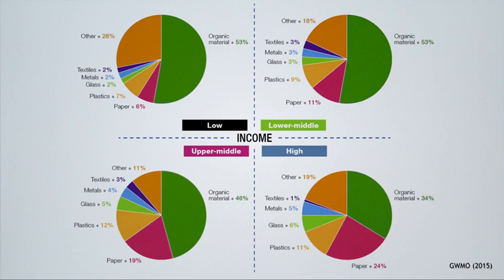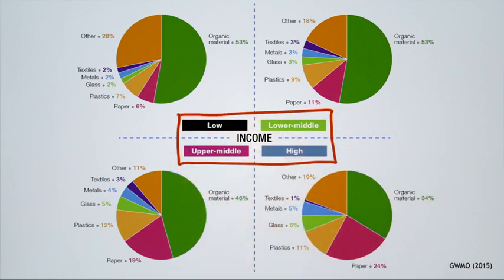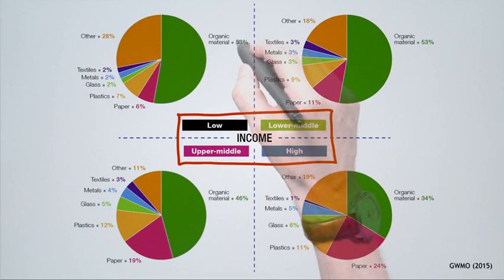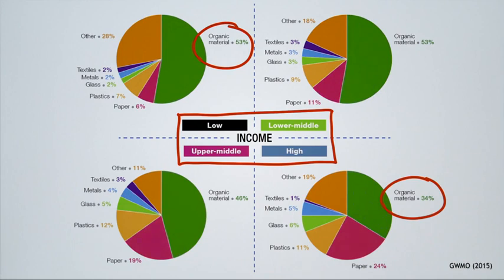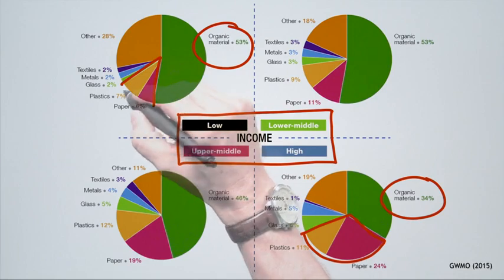Now let's look at municipal solid waste composition. These pie charts show the different fractions in municipal solid waste for four different income groups: low income, lower middle income, upper middle income, and high income countries. In low income countries, the organic fraction is significantly higher than in high income countries. On the other hand, packaging waste — paper and plastic — in high income countries is much higher than in low income countries.